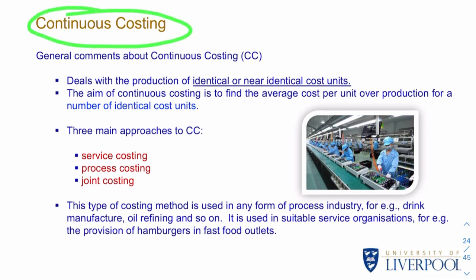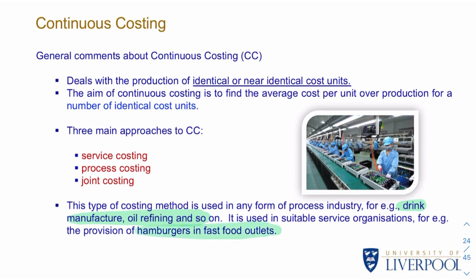For continuous costing — the other main type — this is where you have more of a production line, like a conveyor belt. You have a continuous process, such as drink manufacture, oil refining, or hamburger production in the fast food industry.